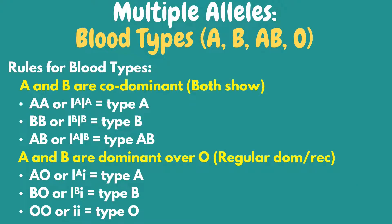To summarize, a description of the pair of alleles in our DNA is called the genotype. Since there are three different alleles, there are a total of six different genotypes at the human ABO genetic locus. The different possible genotypes are AA, AO, BB, BO, AB, and OO.